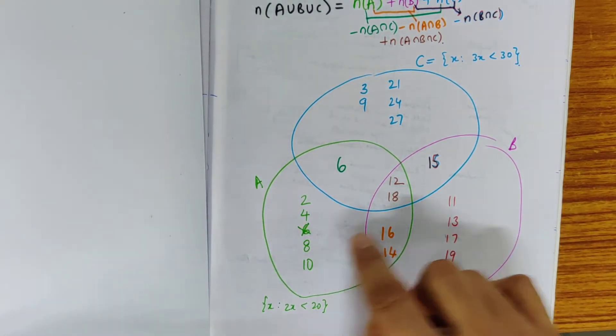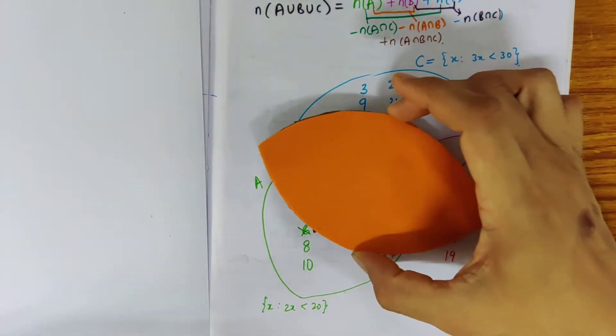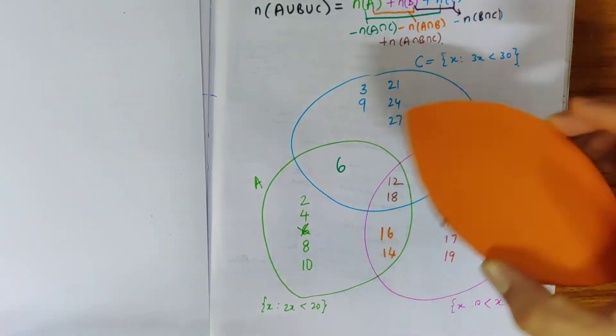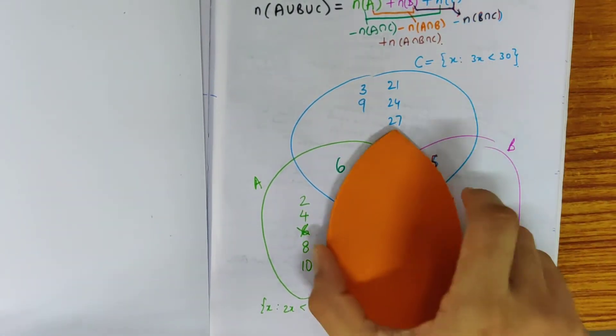So overlap between any 2 sets which look similar to a piece like this right between these 2 or between these 2 or between these 2.